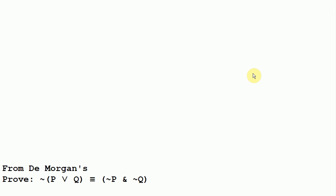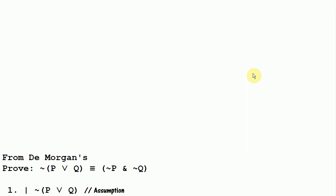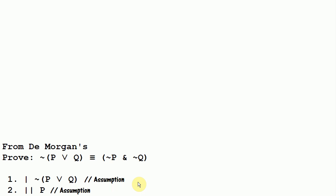We're starting with a proof of: neither p nor q is equivalent to not p and not q. As usual, we're going to start by assuming what we have on the left side of the biconditional, which is neither p nor q. And we want to get not p and not q. This is a conjunction — we can get a conjunction by proving each of the conjuncts and then conjoining them together. So we want to prove not p and not q separately. We can use indirect proof to prove not p, starting by assuming p, which is the opposite of what we want to prove. If we can get a contradiction, we'll be able to derive not p.